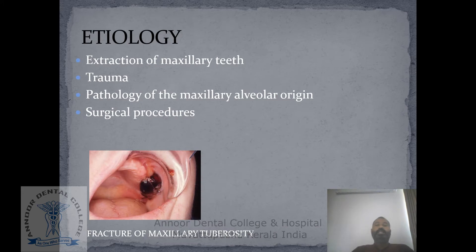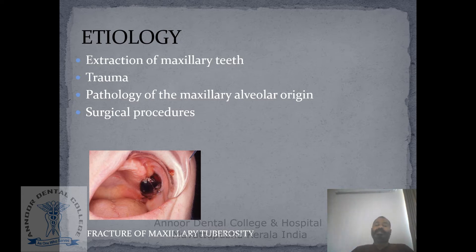The various etiologies relating to oro-antral communication include extraction of maxillary posterior teeth, particularly first molar teeth, second molars and premolars; various trauma relating to the maxillofacial region; pathologies like cysts and tumors of the maxillary angular region which could erode the bone and cause oro-antral communication; and various surgical procedures pertaining to the maxillary sinus region, such as implant surgery.